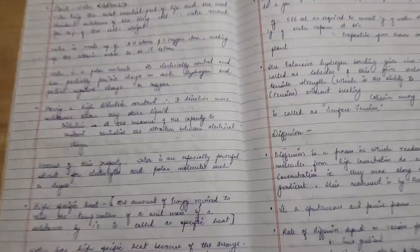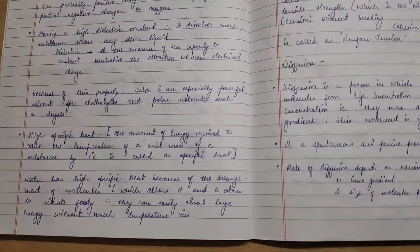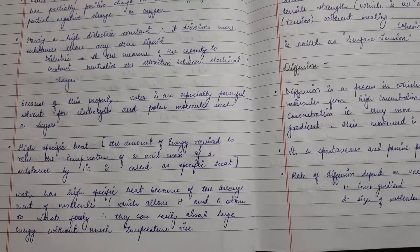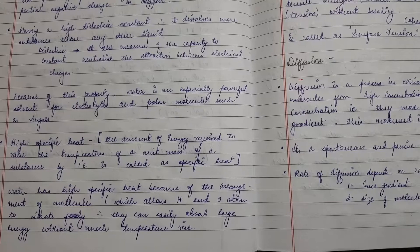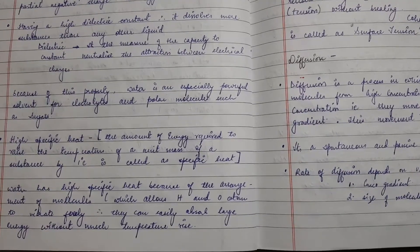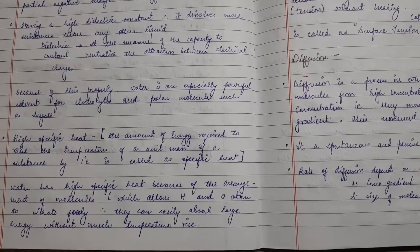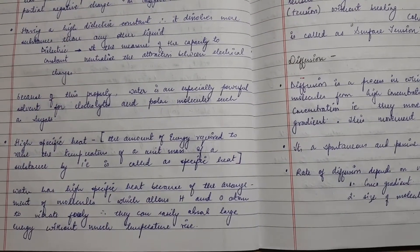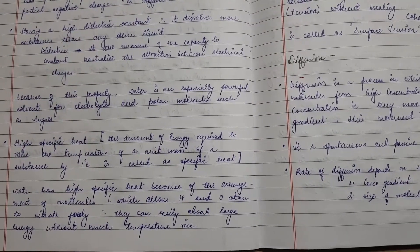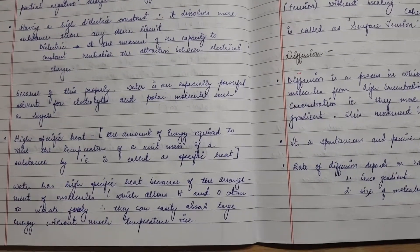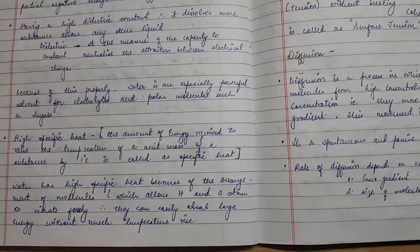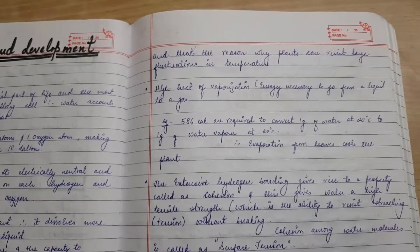Water also has high specific heat. Specific heat is the amount of energy required to raise the temperature of a unit mass of a substance by one degree. Water has high specific heat because of the arrangement of molecules, which allows hydrogen and oxygen atoms to vibrate freely, enabling them to absorb large amounts of energy without much temperature rise. This is why plants can resist large fluctuations in temperature.